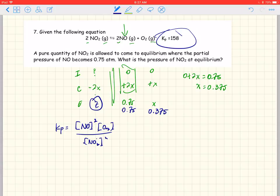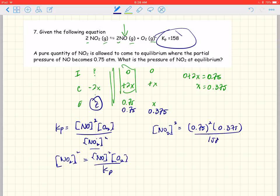So let's solve this equation for NO2. I'll do the square root later. So NO2 squared is equal to NO squared which is 0.75 times oxygen, divided by 158. So NO2 squared is equal to 0.75 squared times 0.375 and divided by 158. So I get a value of 1.34 times 10 to the minus 3.